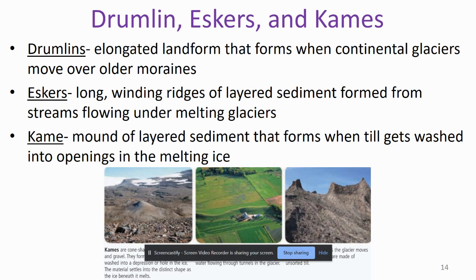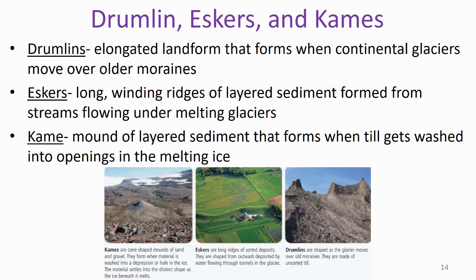We have drumlins, which are elongated landforms that form when continental glaciers move over old moraines. We have eskers, which are long winding ridges of layered sediment formed from streams flowing under melting glaciers — you can see a picture of an esker here, this winding ridge. And we have kames, which are cone-shaped mounds of sand and gravel — mounds of layered sediment that form when till gets washed into openings in the melting ice.